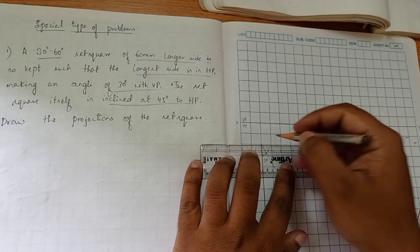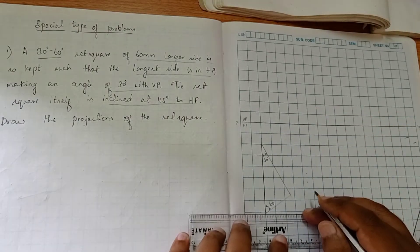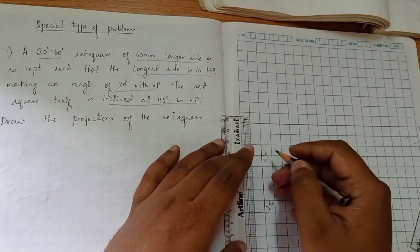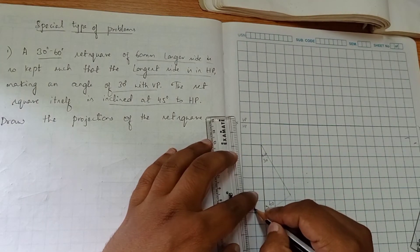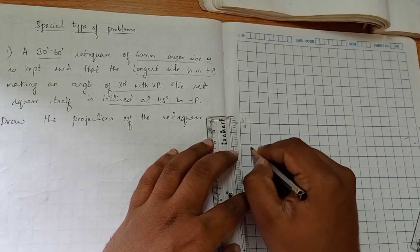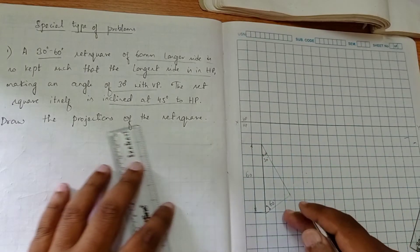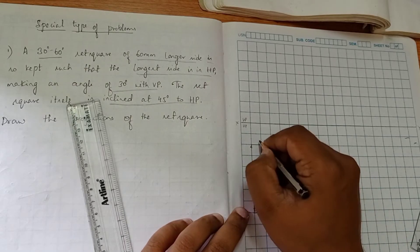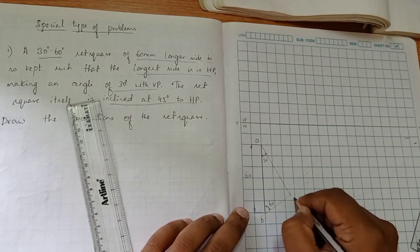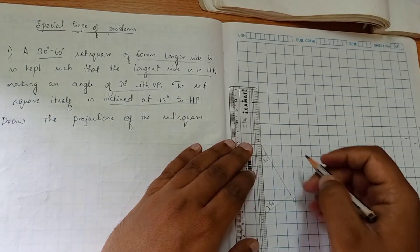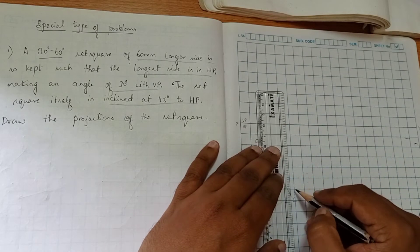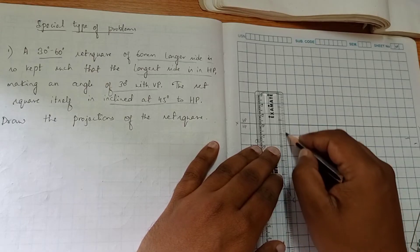So in this, you can see, we have drawn it with respect to the question given. We will be showing the dimension - 60. So we have drawn it with respect to the longer side and we will be giving the name for it: A, B, C. Project it to complete the front view.